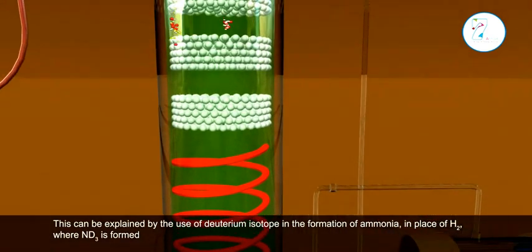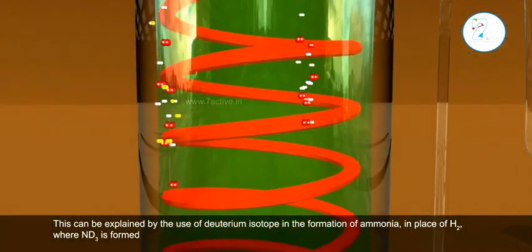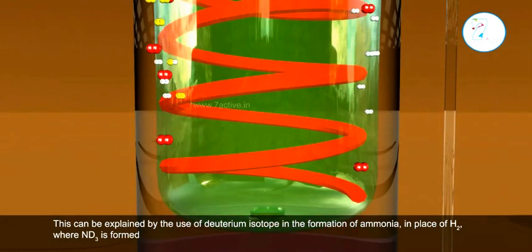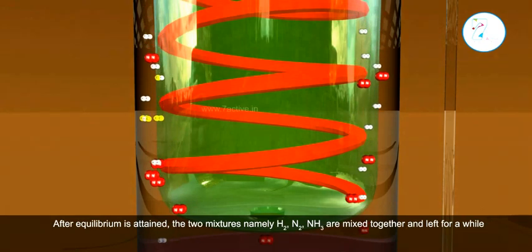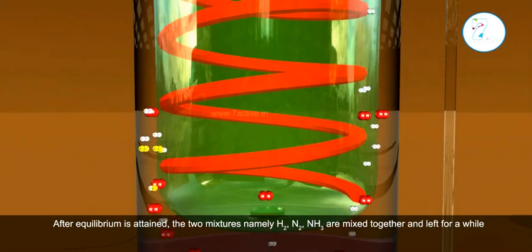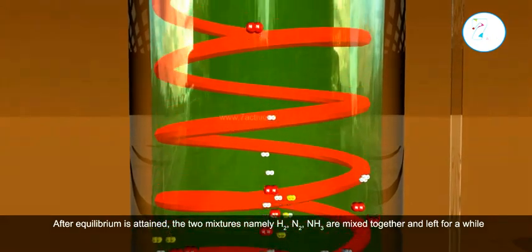This can be explained by using deuterium isotope in the formation of ammonia in place of H2, where ND3 is formed. After equilibrium is attained, the two mixtures—H2, N2, and NH3—are mixed together and left for a while.